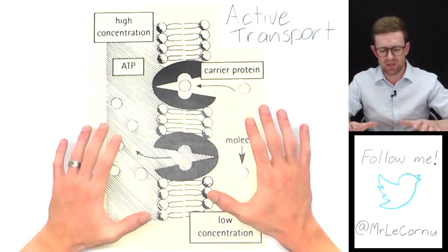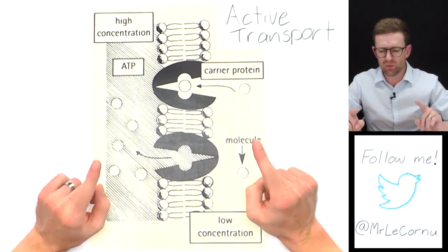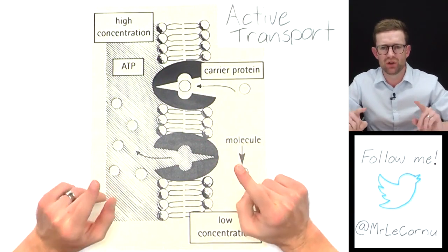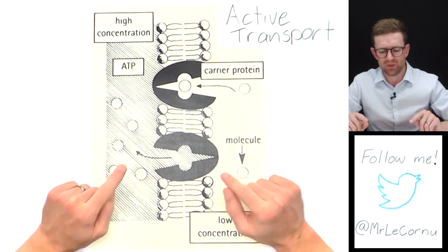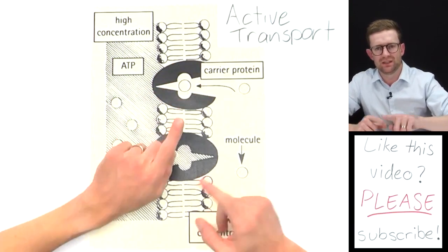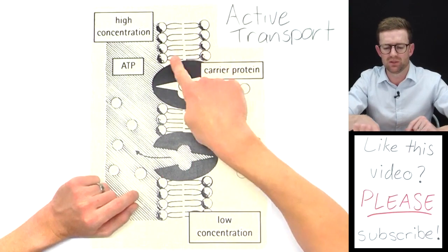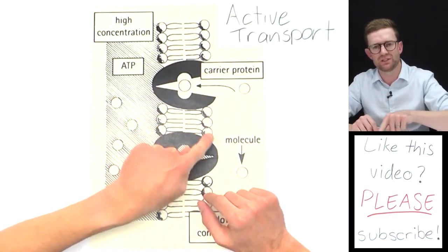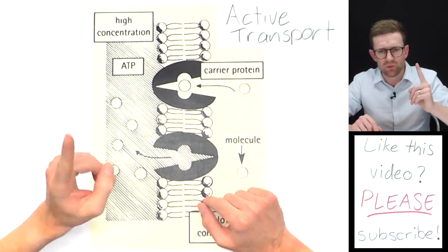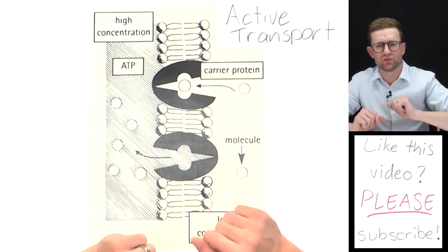Here I've got a diagram of the cell membrane again, but now I want to show you one more key component for active transport. It requires these things called carrier proteins. The membrane's made of phospholipids in a bilayer, but it has these proteins embedded. One of the roles of those proteins is to be carrier proteins to help active transport happen.